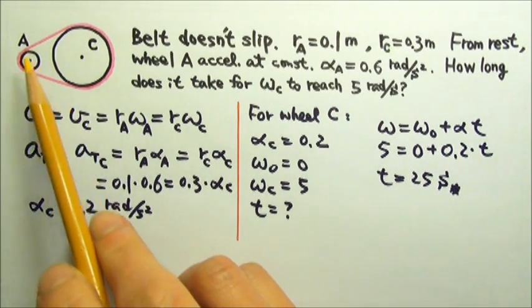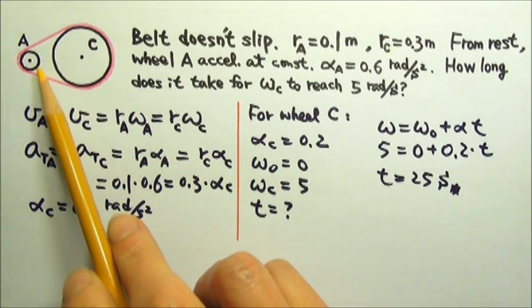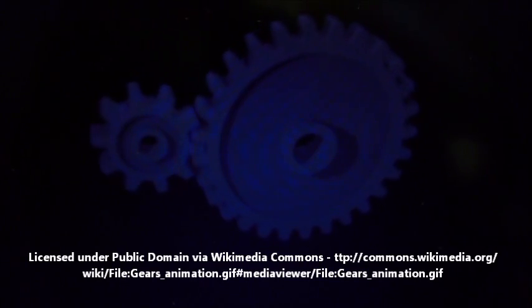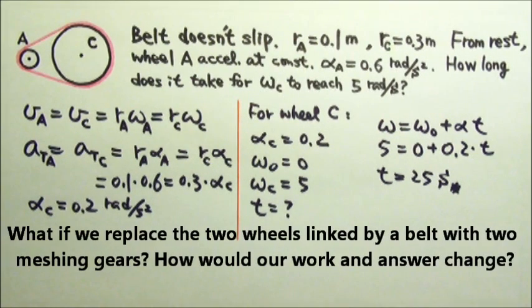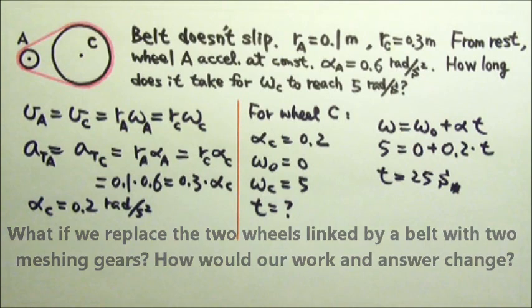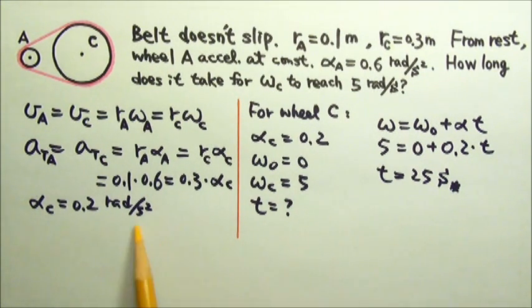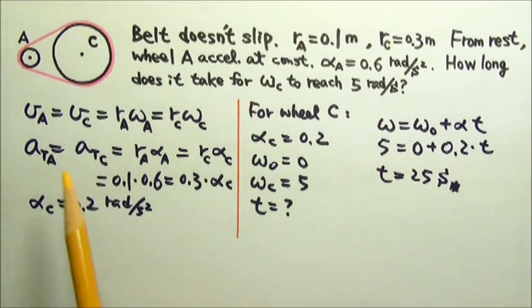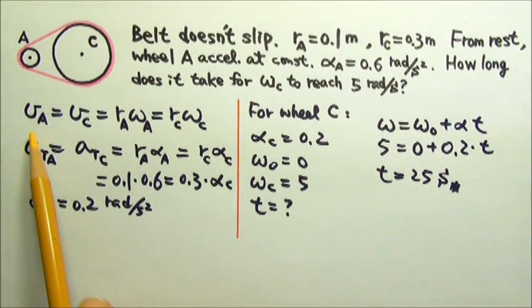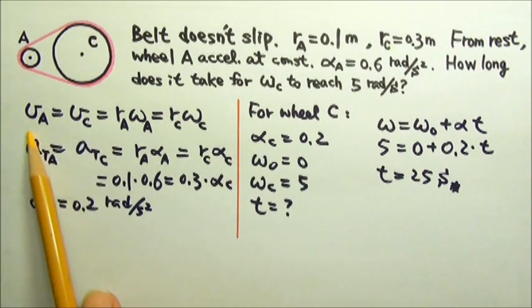What if we replace the two wheels linked by a belt with two meshed gears like these? How would our work and answer change? Nothing. All the work and the answer would still be the same. Because the two meshed gears would also have the same speed at the rim.